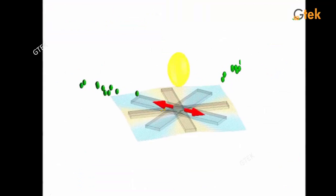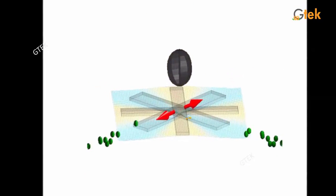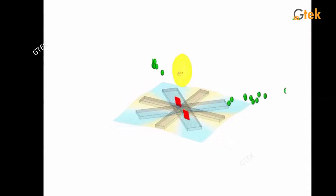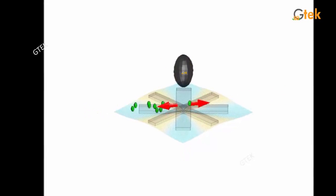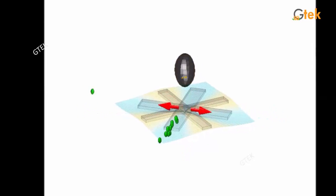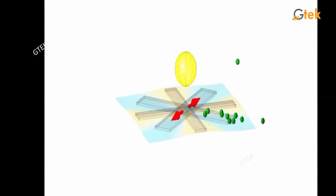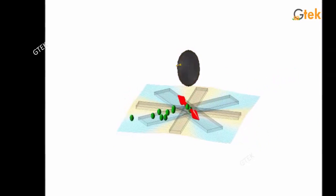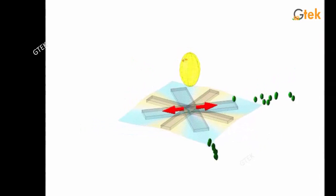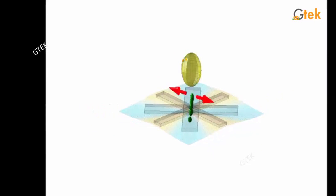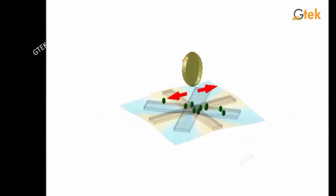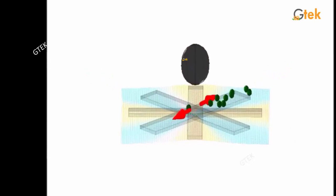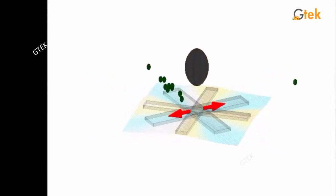In a ferromagnetic substance, you are able to see that once a magnetic field arises, the magnetization of the material will change automatically based on the direction. In one direction it's off; automatically it will move back to the original direction where the magnetization property will retain. This is how ferromagnetic materials react.